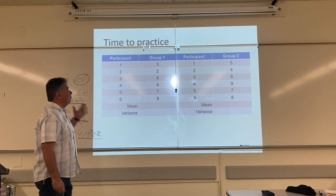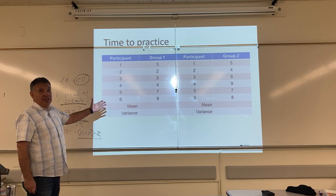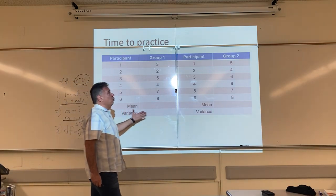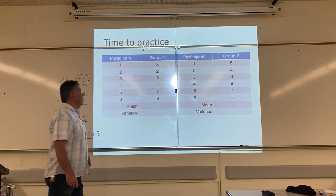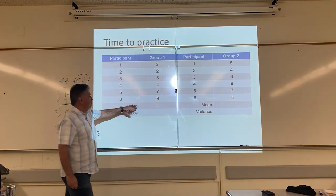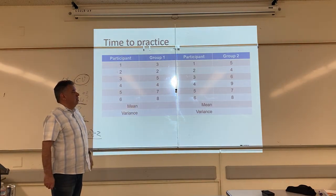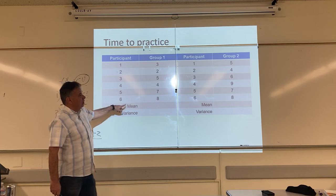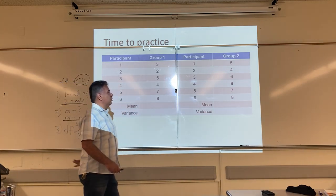And we're back! All right, I'm going to show you how we solve this problem here. So we have two groups, we're looking for a difference. This time our group sizes are the same. We need to find the mean and the variance for each group. So we already know our sample size for group 1 is 6, and our sample size for group 2 is 6.